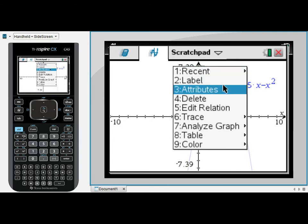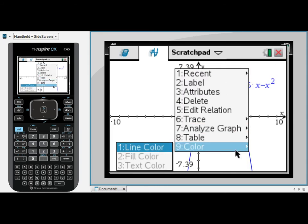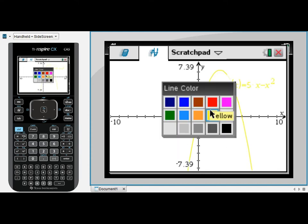You have options here. You can click on label. Oh my apologies, I didn't mean label. You can change the color, you can change the weight of the line, all sorts of things.